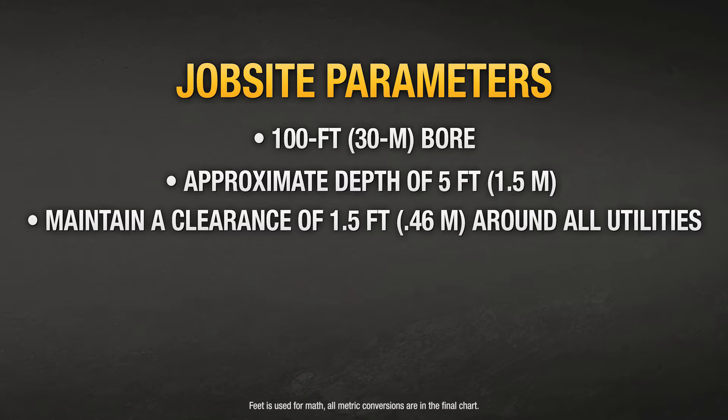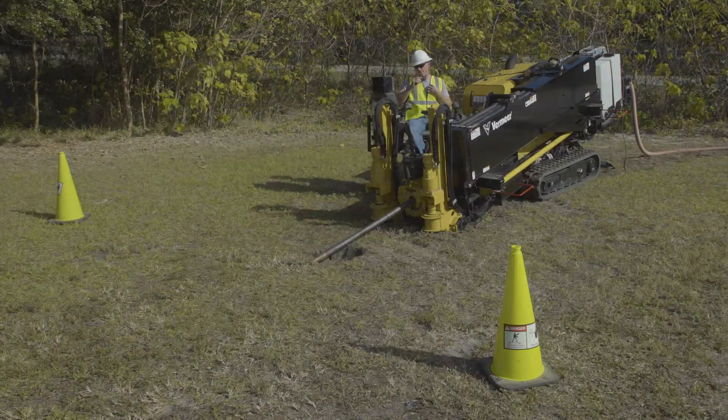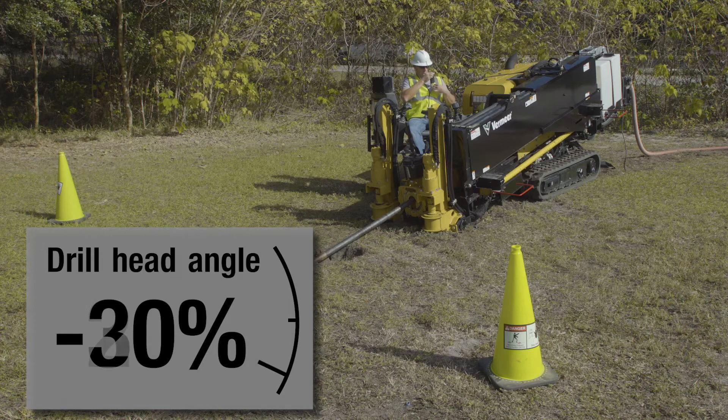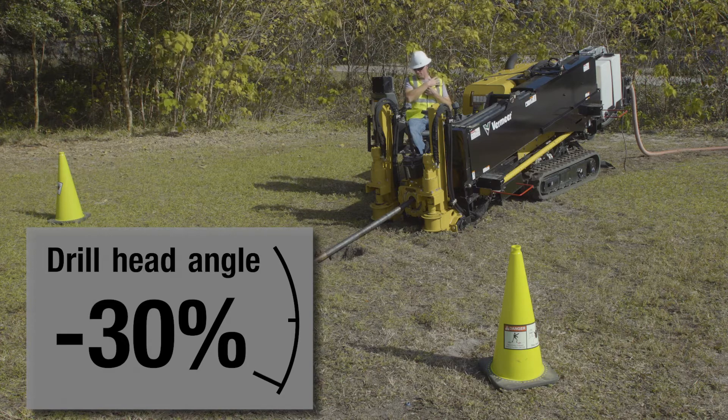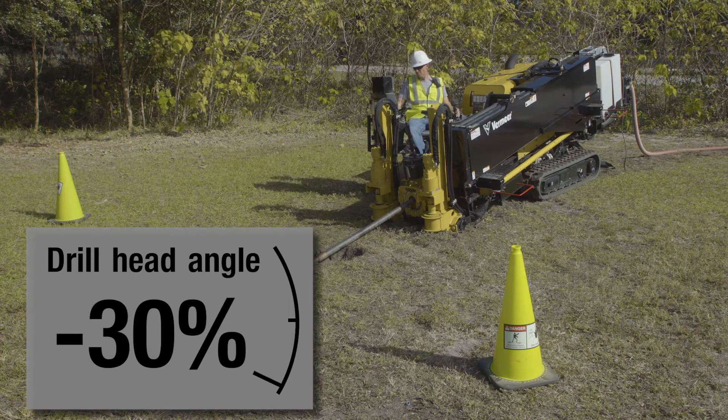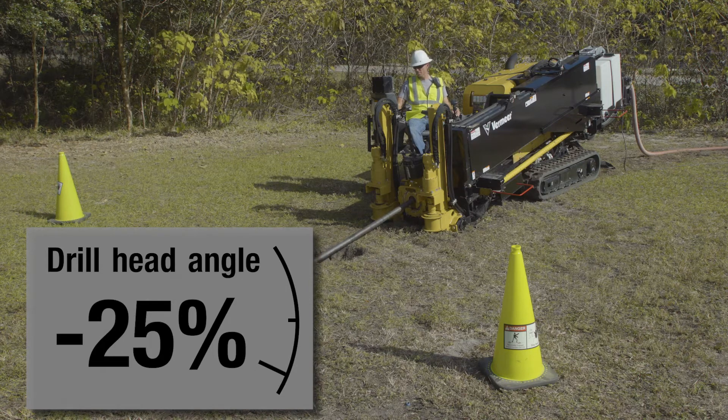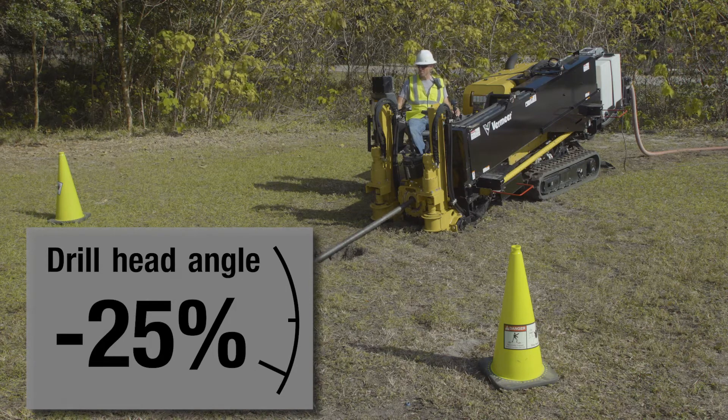An average drill setup on level ground will have the drill head position or angle sitting between negative 20% and negative 30%. For this reason, I will normally start my proposed bore plan with my first rod at a negative 25%. To calculate my first rod depth, I multiply the 10-foot rod by the current pitch of negative 25%. This equals negative two and a half feet, which is the approximate depth change of the drill head once the full rod has been drilled into the ground.